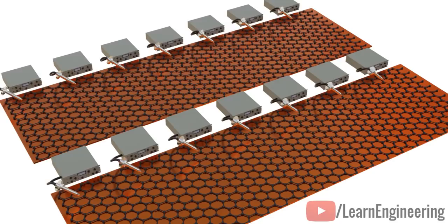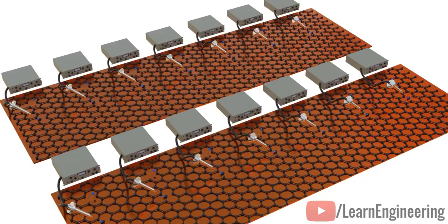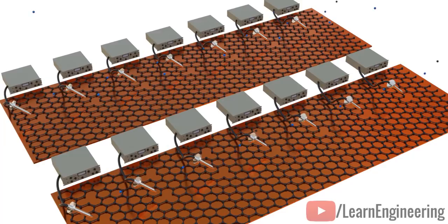On an industrial scale, however, the position of the holes cannot be precisely predicted. Thus, it is impractical to use graphene as a filtration membrane for large-scale manufacturing.